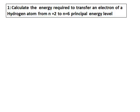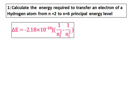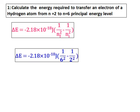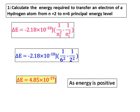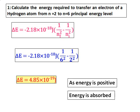Calculate the energy required to transfer an electron of hydrogen from n equals 2 to n equals 6 principal energy level. We will use the formula delta E equals minus 2.18 times 10 to the negative 18. Here the final level is 6, initial level is 2. Substitute the values appropriately and you get the value of energy. The energy comes out as positive, therefore energy is absorbed. This is what happens whenever an electron is shifted from a lower level to a higher level.